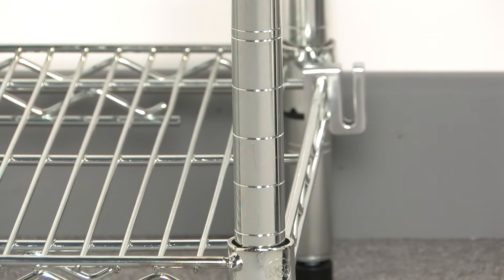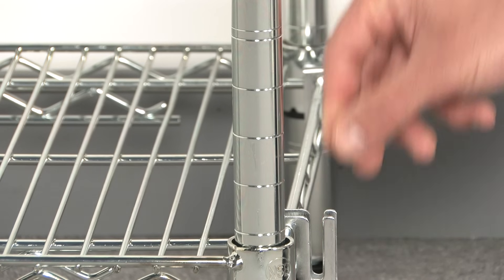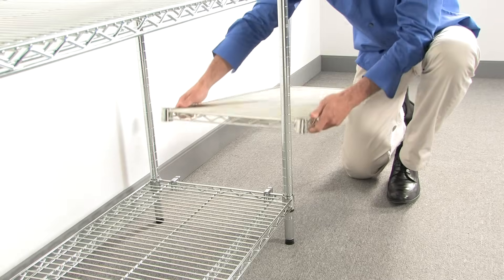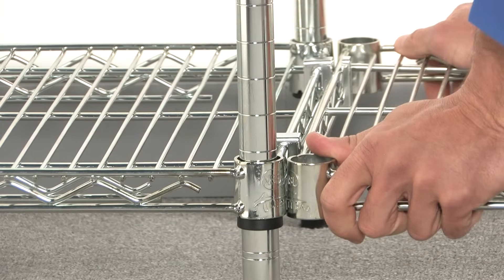Place two S-hooks in the middle of the rack and slide to the edge. Align the shelf with the S-hook and firmly push down until the shelf is stable.